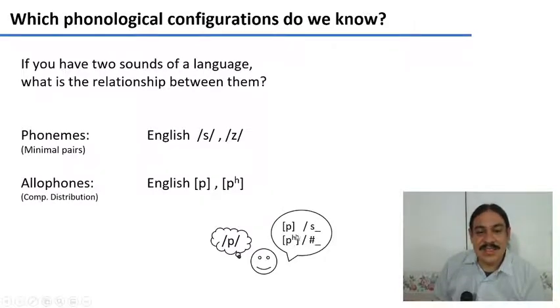Sometimes you see this sound, aspirated P, and you only see that one at the start of a word, according to the data that we have so far. So these are two phonetic manifestations of the same mental reality, which we're gonna call a phoneme.